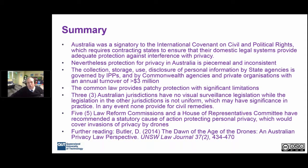When it comes to the surveillance laws, we have eight jurisdictions in Australia. Three of those — Queensland, the ACT, and Tasmania — don't have visual surveillance laws, so there's nothing stopping drones from taking images of people. The other five jurisdictions do have visual surveillance laws, but they're all inconsistent and not uniform. For example, the Victorian law doesn't apply to anything occurring outside of a building, and the South Australian law doesn't apply to anything in public. So a very uneven landscape when it comes to privacy protection in Australia.